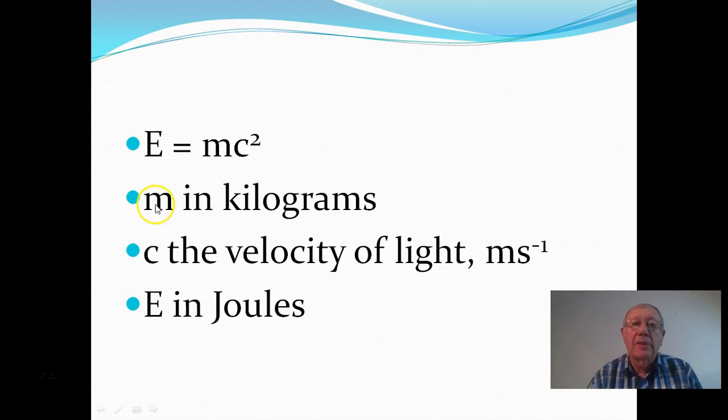If we have the mass in kilograms and C, now that C stands for the velocity of light in meters per second, which of course is three by 10 to the eighth. And that gives us the energy there in joules.